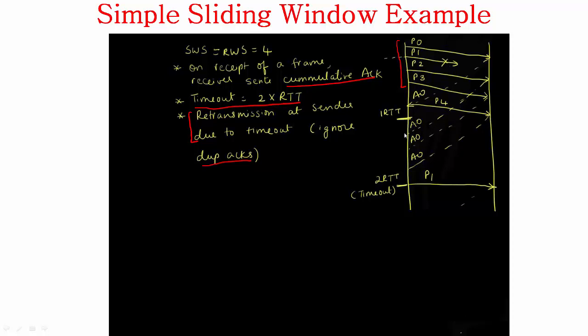Now I've got another acknowledgement for A0. This is a cumulative acknowledgement generated in response to P2. But since my retransmission is due to timeout, I'm just going to ignore these duplicate acknowledgements. So I got acknowledgements in response to P2, P3, and P4.